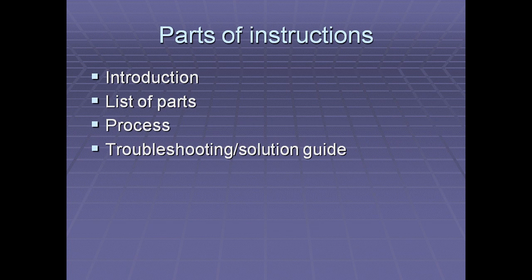Let's talk about the parts of instructions. Instructions as a genre are very easy to create because there are very specific guidelines. There are four parts: the introduction, the list of parts, the process, and finally the troubleshooting or solution guide. Each of those four parts has defined pieces within them, so as long as you can check off those boxes, you're in the clear.